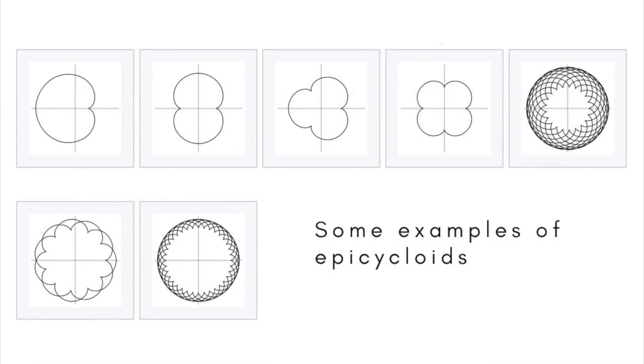An epicycloid with one cusp is called a cardioid. One with two cusps is called a nephroid, and one with five cusps is called a ranunculoid after the buttercup genus ranunculus.